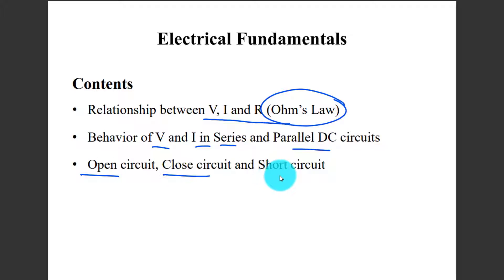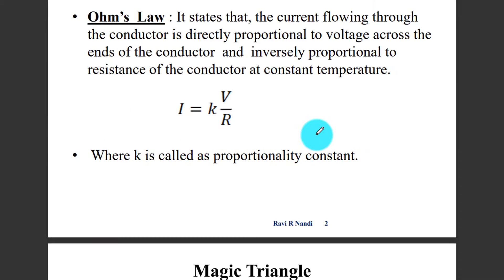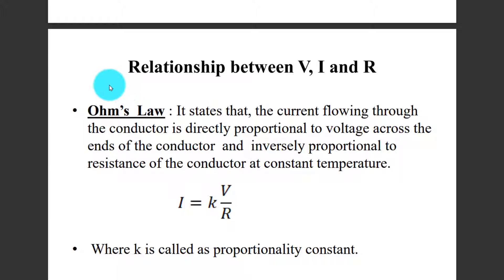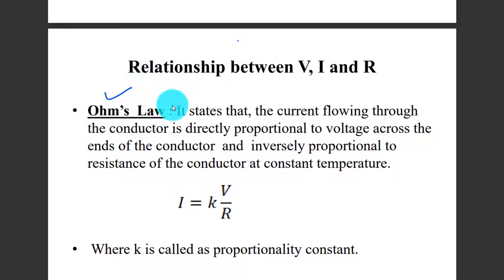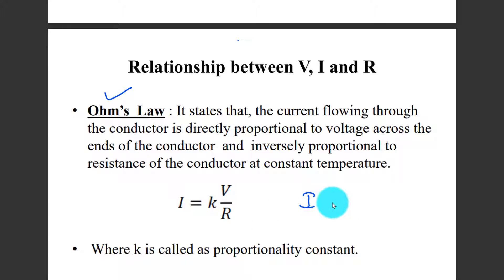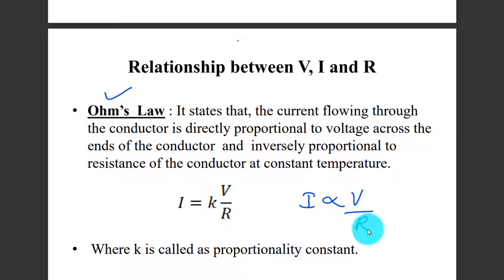We will also cover open circuit, closed circuit, and short circuit. The relationship between V, I, and R is nothing but Ohm's Law. Without Ohm's Law, we cannot complete this chapter. Ohm's Law states that the current flowing through a conductor is directly proportional to the voltage across the ends of the conductor, and inversely proportional to resistance.